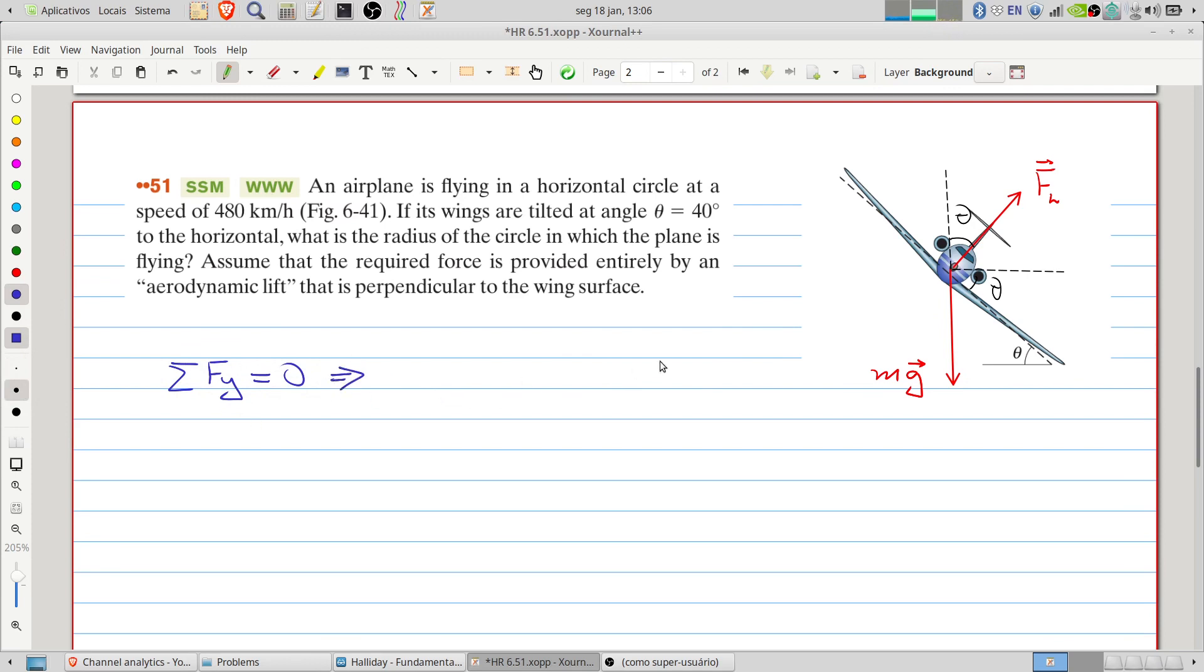Therefore, the projection of the lift in the vertical direction, that is, the lift multiplied by cosine of theta minus mg, the weight, equals to zero. This implies that the lift force will be mg divided by cosine of theta.